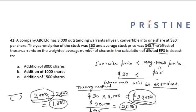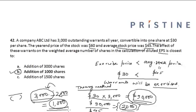Hence, option B is the correct answer. Remember: first check whether the average stock price is greater than the exercise price. If it is, calculate the proceeds from the exercise of the warrants to the firm, and use those proceeds to repurchase shares at the average stock price. The net figure reflects the addition of new shares for the calculation of diluted EPS.